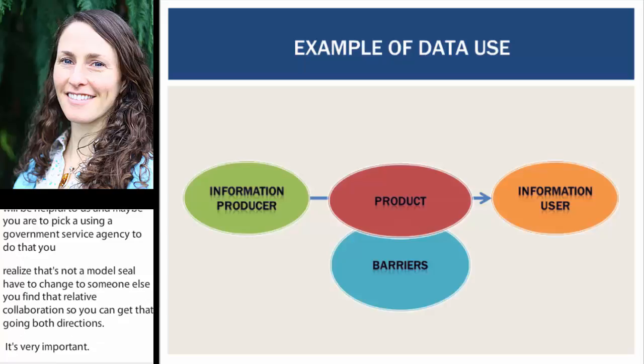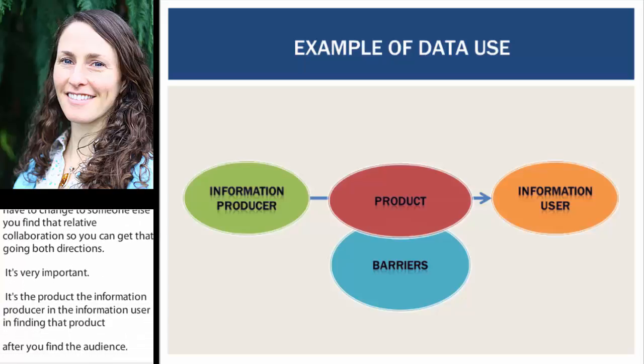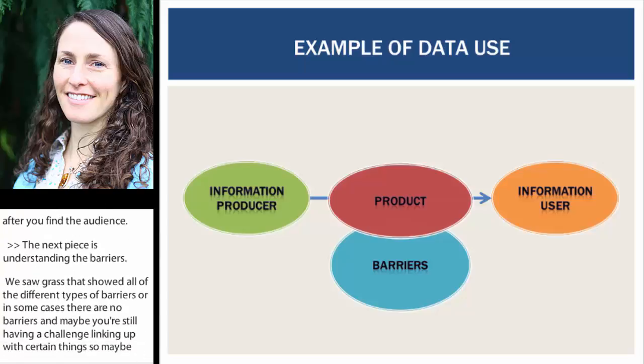The next piece is understanding those barriers to use. We saw a lot of graphs that showed all the different types of barriers — or in some cases there are no barriers — but maybe you're still having a little bit of a challenge linking up with certain things. Take a step back: was it the right product or the right collaborator? Really think about understanding those barriers as a means to overcome them so you can put out the best thing possible.